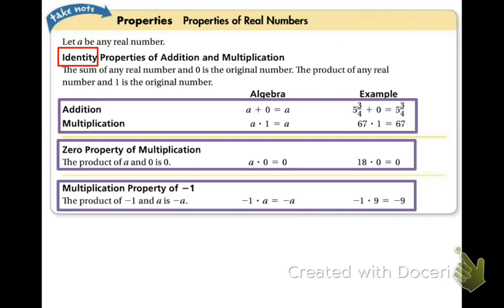If you apply the identity property to multiplication, you're multiplying by one. And when you multiply by one, the value stays the same. So if we multiplied 67 and one, you get 67. That's why it's called the identity property. The value does not change whether you add zero or multiply by one.